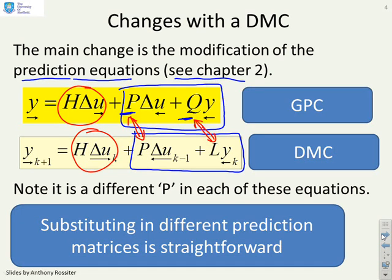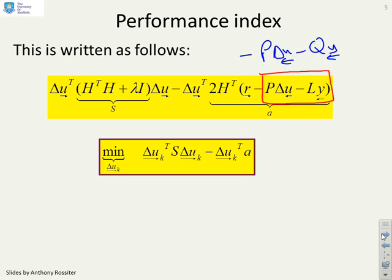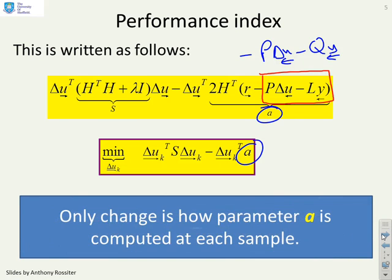So all I need to do is substitute in different prediction matrices in the appropriate places. So my performance index now, you'll notice all I've done is put in the part of the prediction that comes from DMC instead of, if I just put it up here when you had GPC, it was a different P, but you had this type of form. So all I've done is replaced the GPC prediction part with the DMC prediction part. Very easy to do. So in other words, this A parameter is calculated slightly differently. And that's the only change.